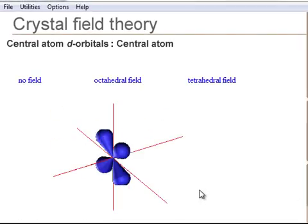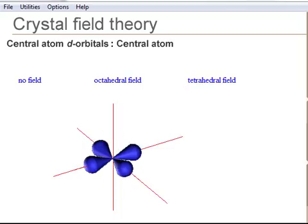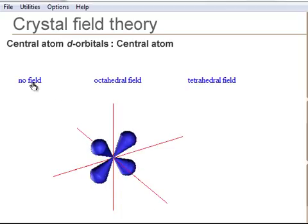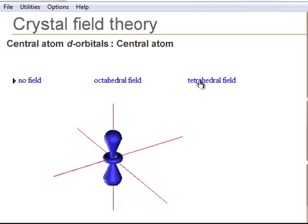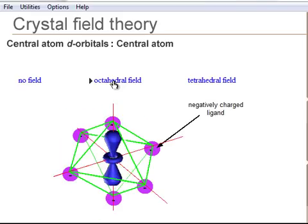Transition metal chemistry is dominated by the d-electrons that can occupy the five d-orbitals. Here is shown the five d-orbitals of the free central atom, the five d-orbitals in the tetrahedral field, and the five d-orbitals in an octahedral field.